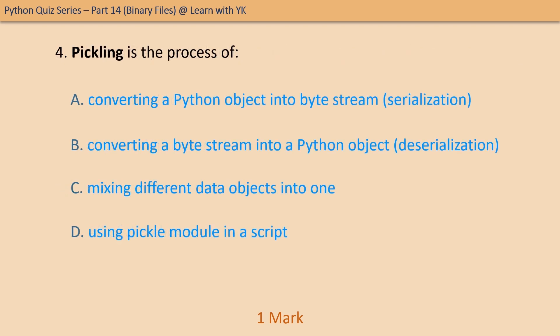Question number four: pickling is the process of — pick the correct option. The correct option is option A — pickling is the process of converting a Python object into a byte stream. This is also known as serialization. The reverse of pickling is also known as deserialization.